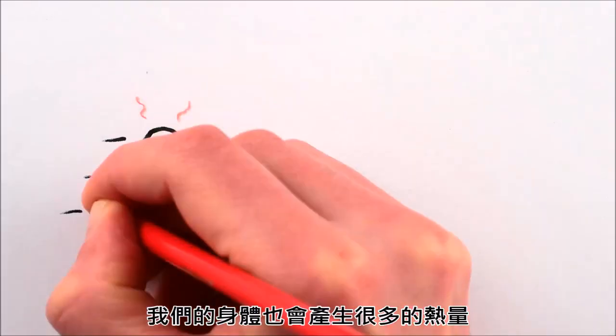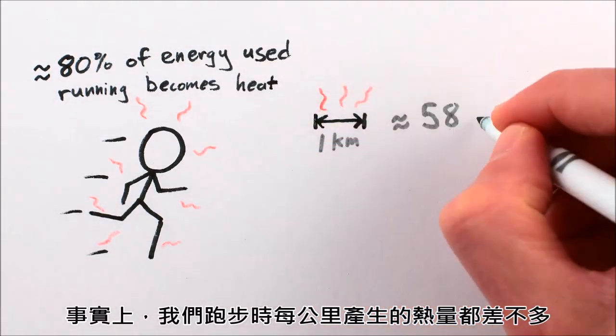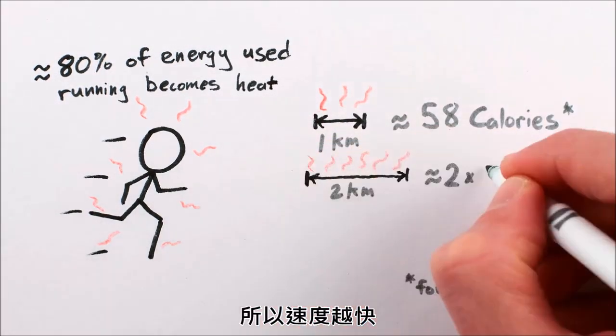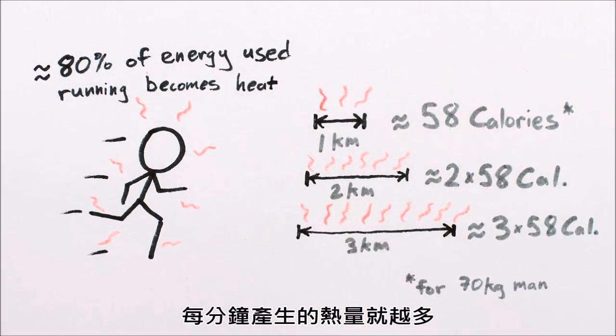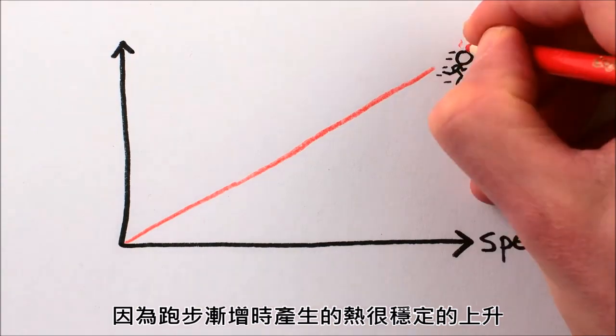Now, when humans run, we also generate a fair amount of heat inside our bodies. In fact, we produce a roughly constant amount of heat per kilometer traveled, so the faster you go, the more heat you generate any given minute.